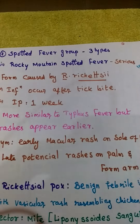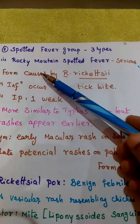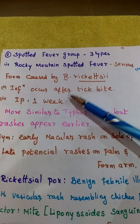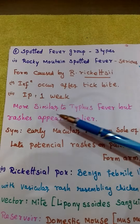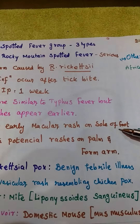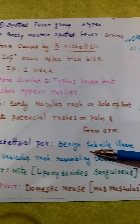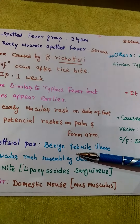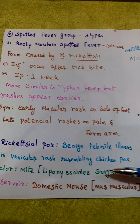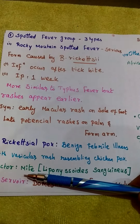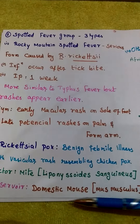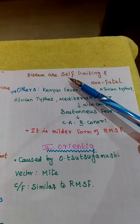The second rickettsia type is the spotted fever group, with three different types. First is Rocky Mountain spotted fever — the serious form, caused by Rickettsia rickettsii. Infection occurs after a tick bite; incubation period is one week. Symptoms are similar to typhus, but rashes appear early — macular rashes first appear on the sole of the foot, then palm and forearm. Second is Rickettsialpox, which causes a benign viral-like illness with vesicular rashes resembling chickenpox. Vector is the mite Liponyssoides sanguineus; reservoir is the domestic mouse. The disease is self-limiting and non-fatal.